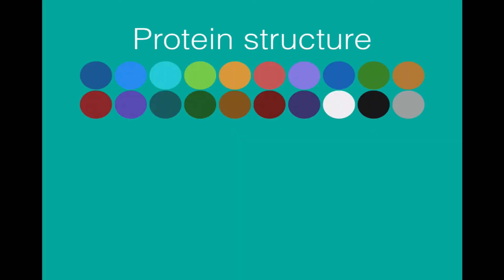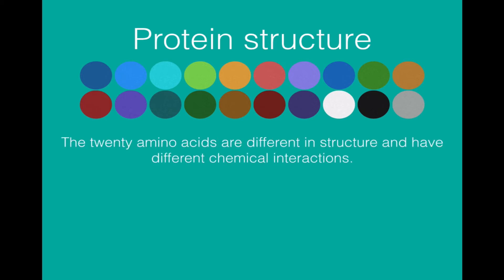Here we have 20 different amino acids. Those different amino acids are different in structure and will interact differently with each other and differently with the environment. So the different amino acids will behave in a different way chemically.